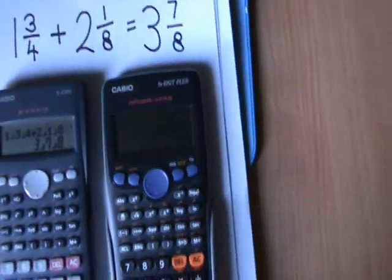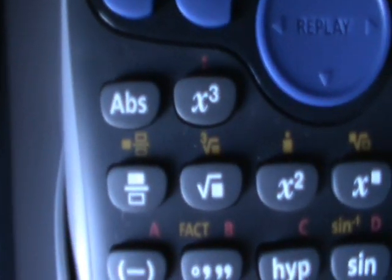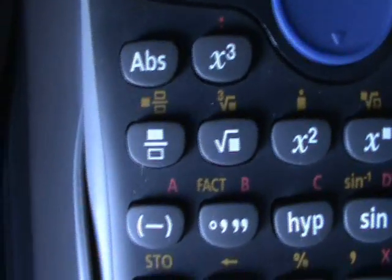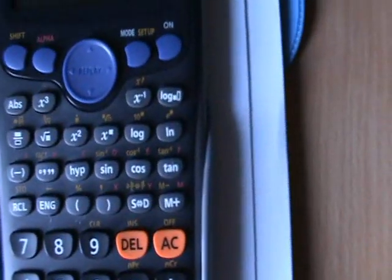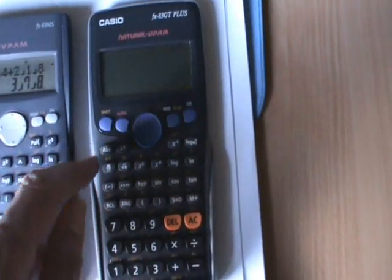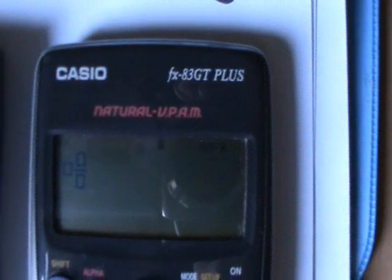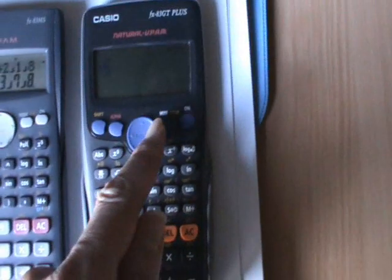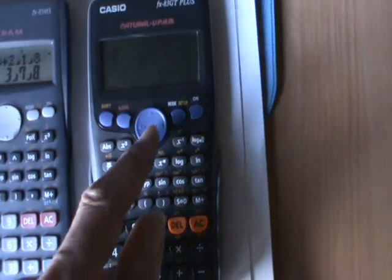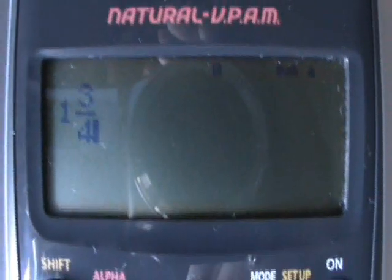Let's see how that works on the other one. To enter a mixed number on this one, we have to use the shift symbol, because above the fraction button you'll see in orange a square filled in and then a square over a square. So that means you can enter a whole number and a fraction using that button. So we've got shift, and on our display we get 3 little squares. So I type in 1, and then I need to use the arrow key to move to the top square where I type in 3. Down arrow, 4. So we've now entered 1 and 3 quarter on this calculator.